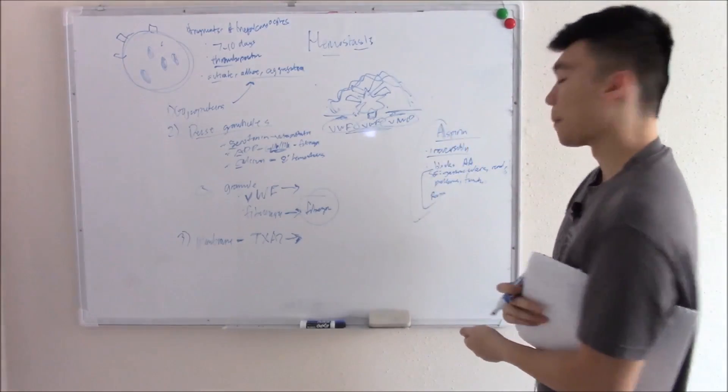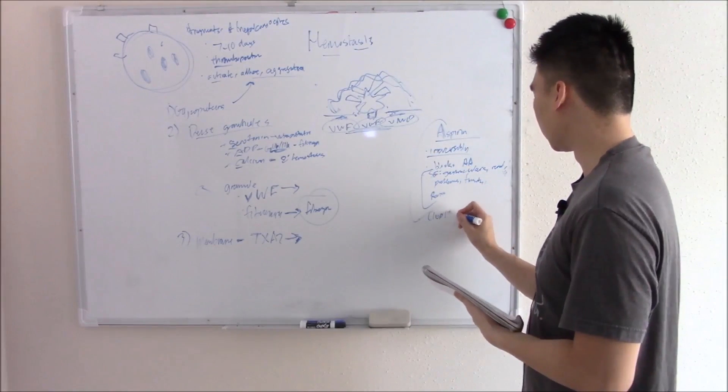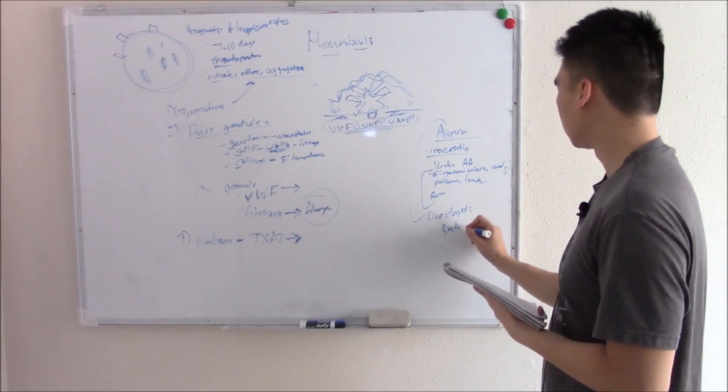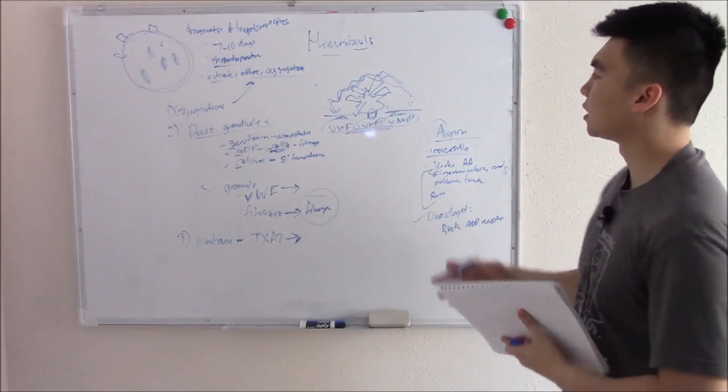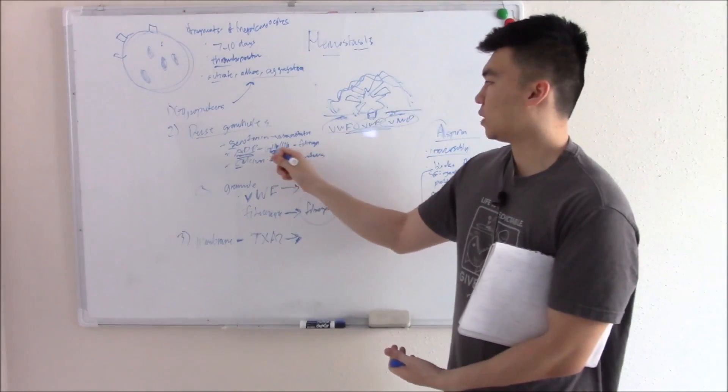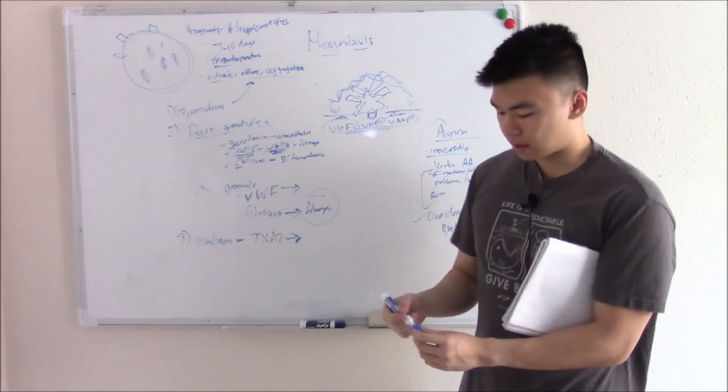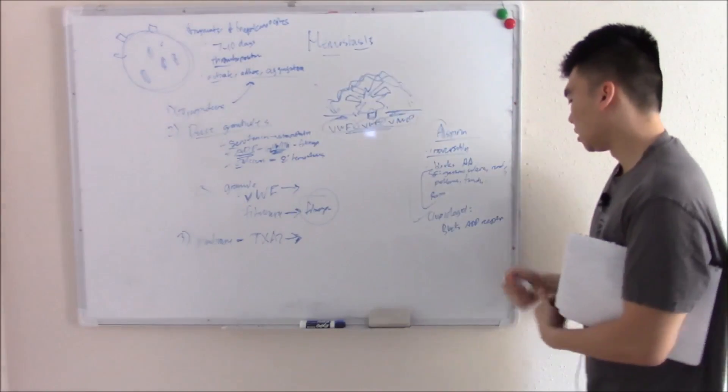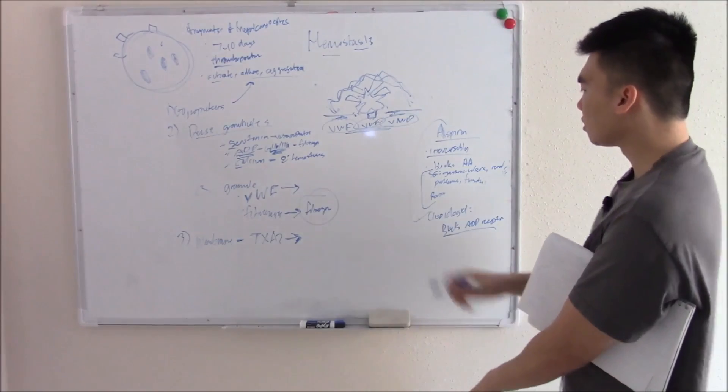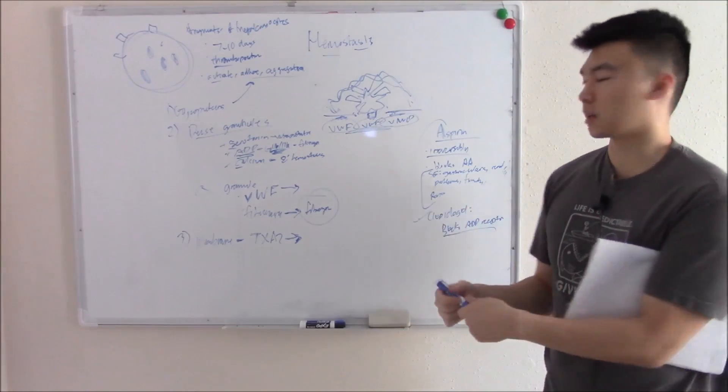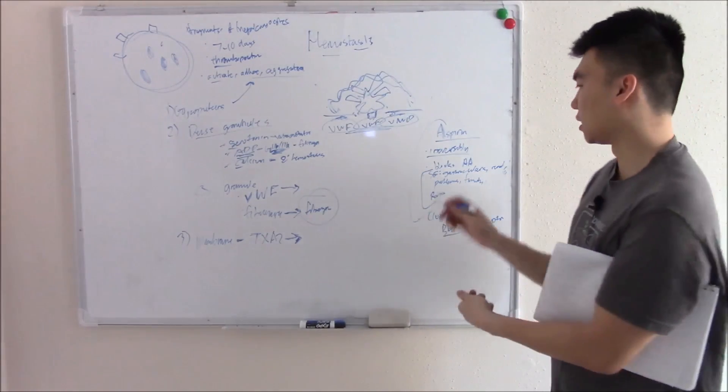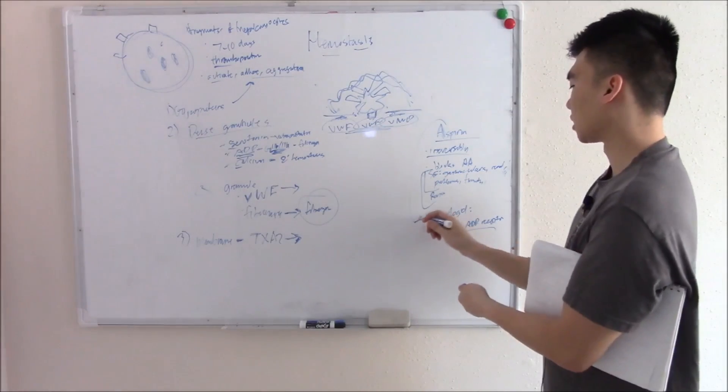Something else we can give is clopidogrel. Clopidogrel blocks ADP receptors. If you block ADP receptors, then ADP can never bind and can never induce expression of GP2b and 3a. Because you can't make those receptors and can't bind fibrinogen, you can't cause that drape. You can use this with aspirin together synergistically or as an alternative to aspirin if the patient has an ulcer or any of these side effects.